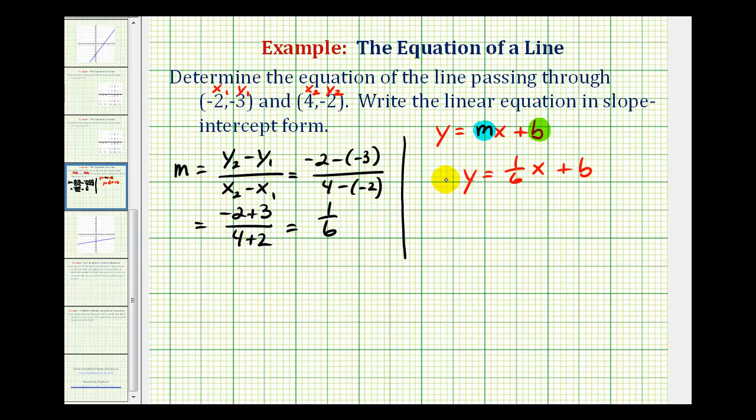So what we can do is select one of these points, substitute the x-coordinate here and the y-coordinate here, which will then allow us to solve for b. Now it doesn't matter which point we use, let's go ahead and just use this second point. So we'll substitute negative two for y and positive four for x. So we're going to have negative two must equal one-sixth times four, but I'll write four as four over one, plus b.